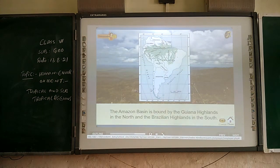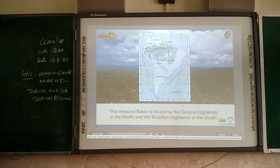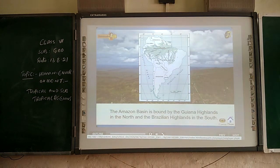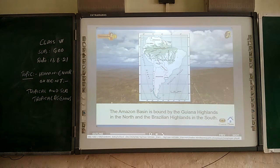The Amazon basin is bounded by the Guiana Highlands in the north and the Brazilian Highlands in the south. The Guiana Highlands lie to the north while the Brazilian Highlands lie to the south, with the Amazon basin in between.